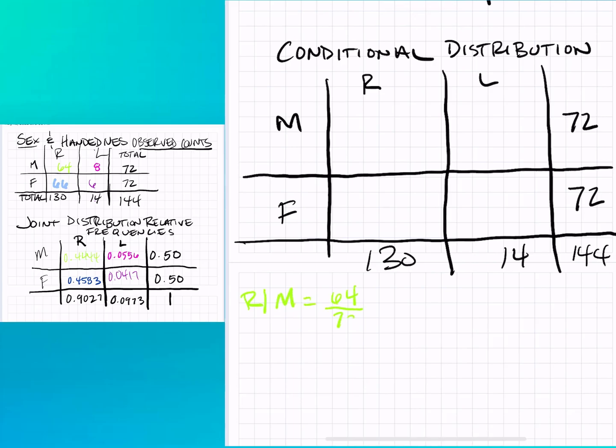So there I wrote R and then a straight line M. That is read as right-handed given that they're males. Remember that was our condition, so it's still a relative frequency. I use that observed count but again I'm using the total for the row.